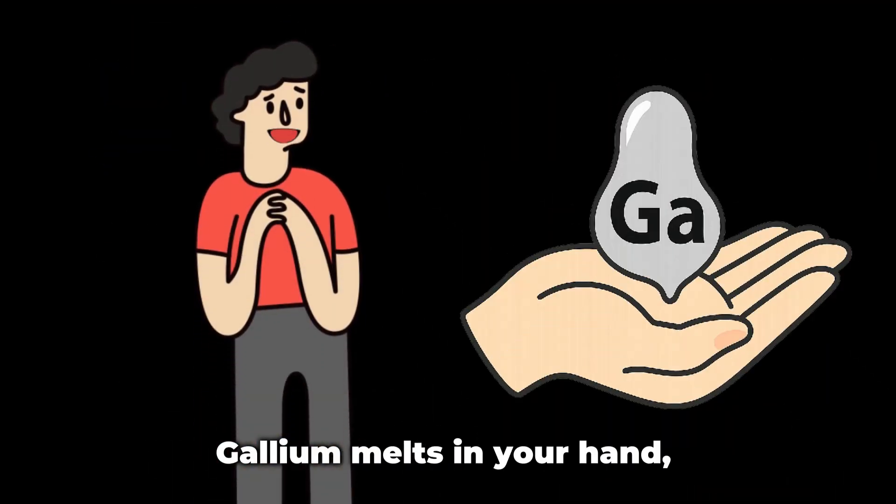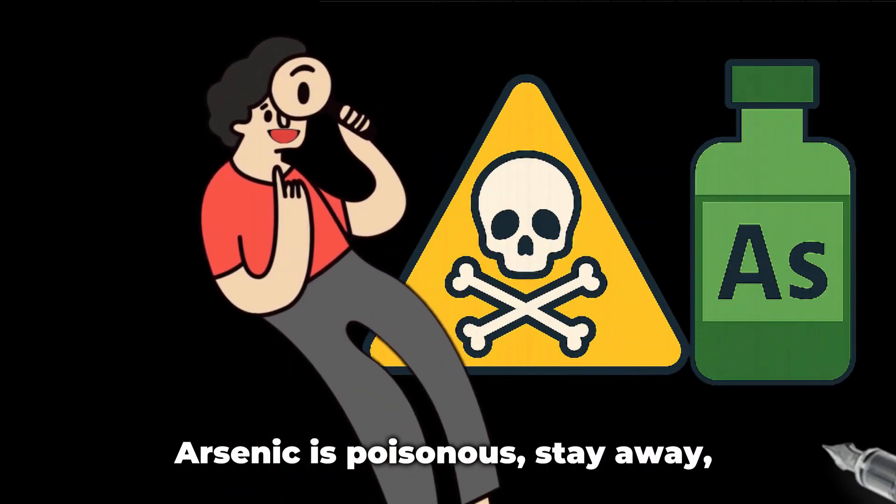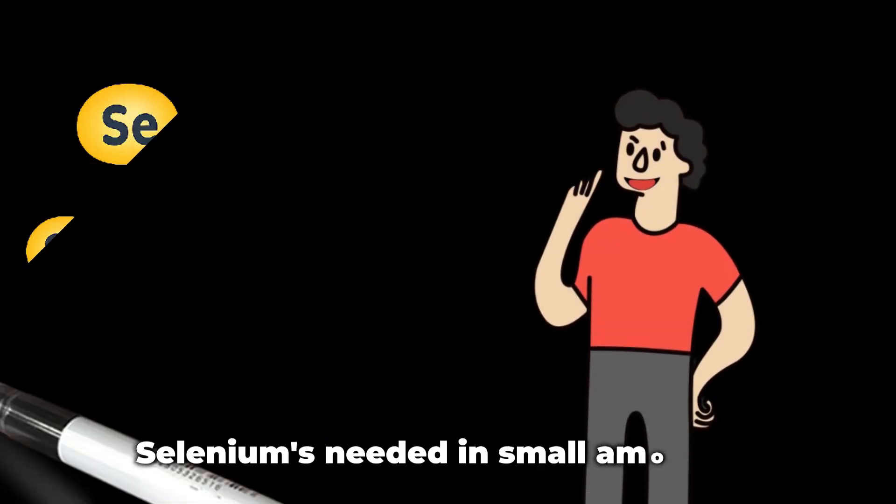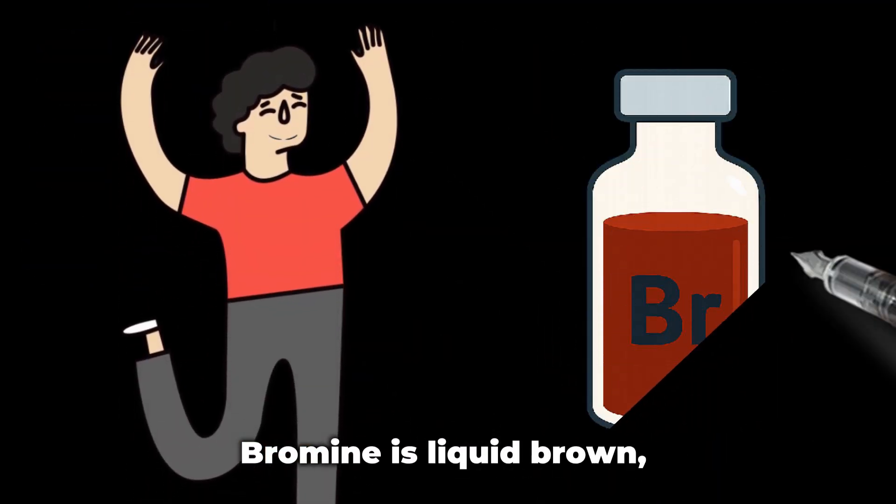Gallium melts in your hand. Germanium semiconducts. Arsenic is poisonous, stay away. Selenium's needed in small amounts. Bromine is liquid brown.